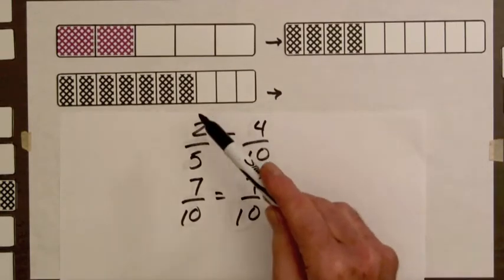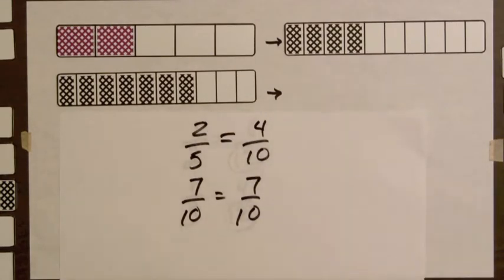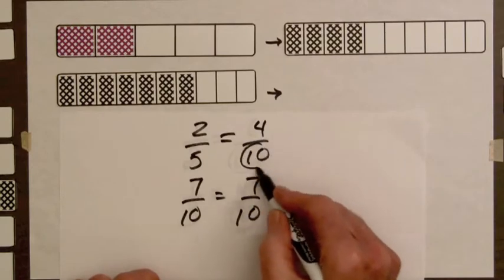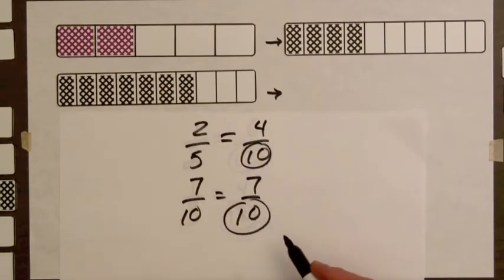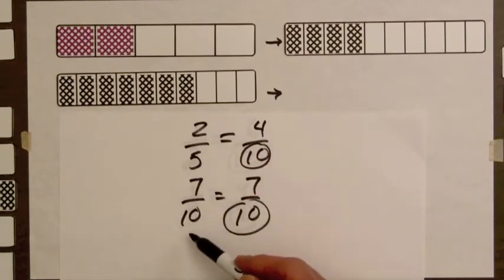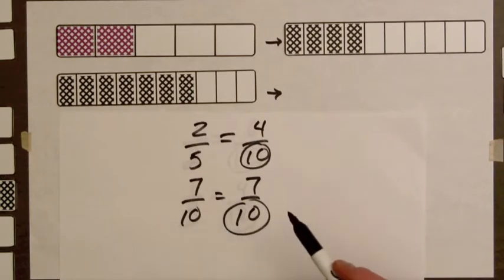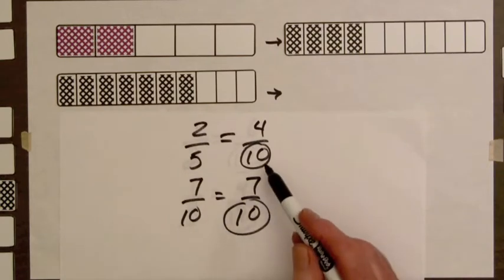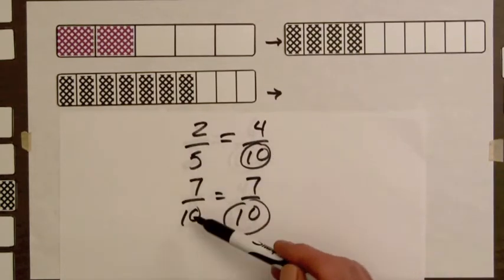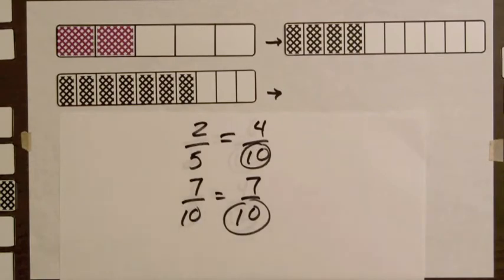The four-tenths bar and the seven-tenths bar have common size parts. So ten is a common denominator for two-fifths and seven-tenths. Since there is no smaller common denominator than ten, ten is the smallest common denominator for these fractions.